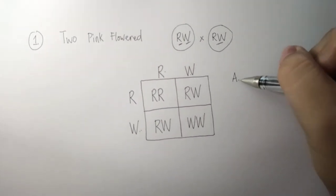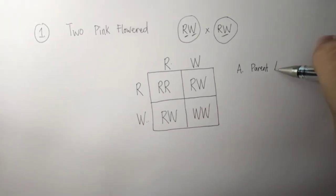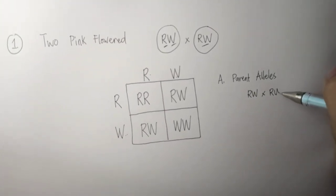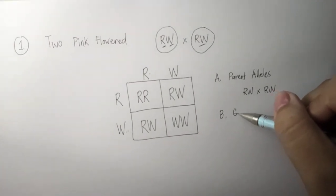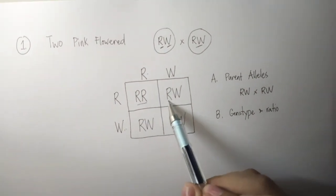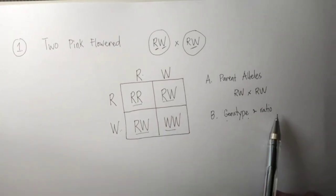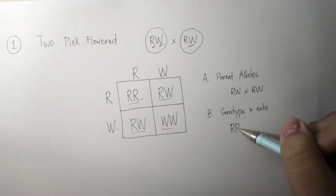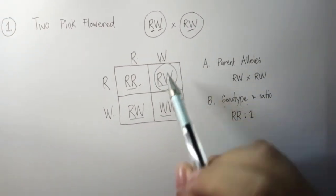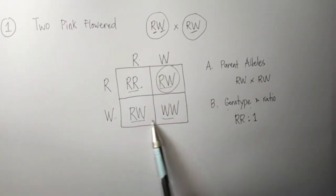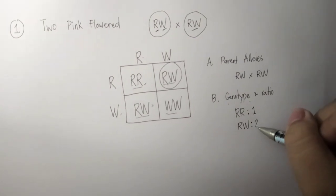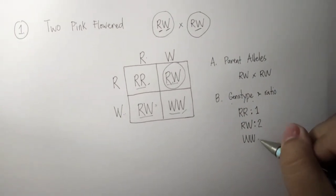Now let's identify letter A — parent alleles. We already have those given: two pink flowers, so RW crossed with RW. For letter B — genotype and ratio: the letters inside the boxes are the genotypes. Starting with the first box, RR appears once, so the ratio is 1. The combination RW appears in two boxes, so the ratio is 2. The last box is WW, with a ratio of 1.